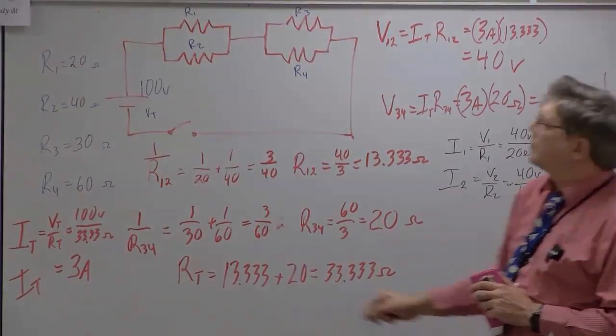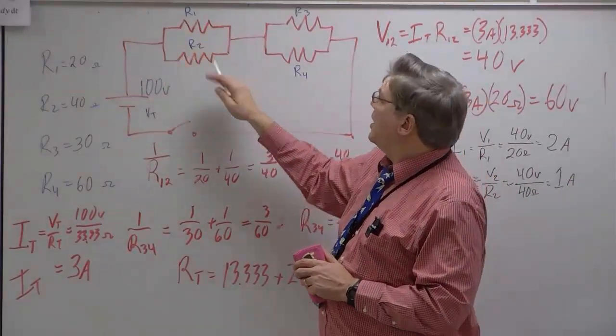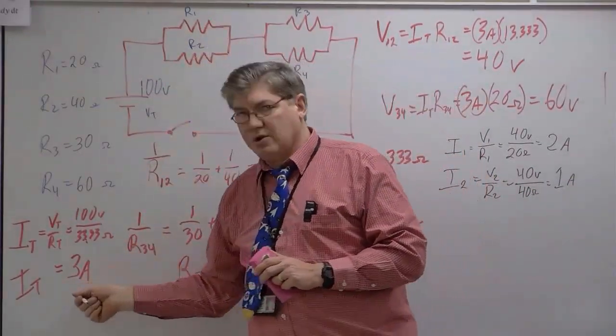If we add those up, we've got 2 amps going up through R1 and one through the other. So, that adds up to 3 amps, which is our total current.